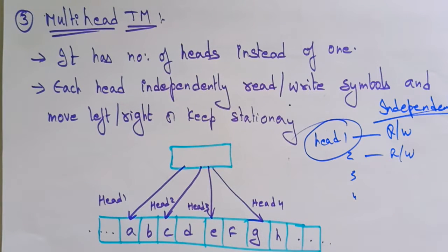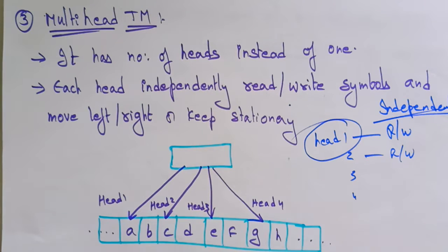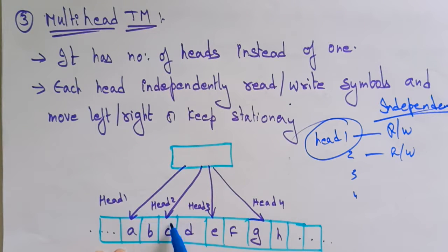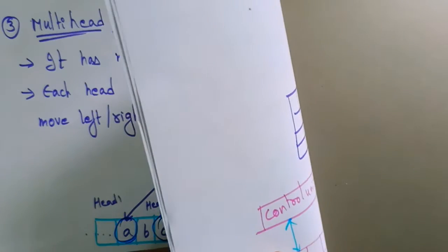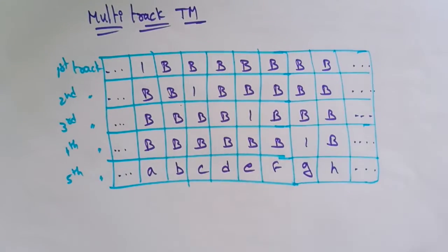You can read, or you can write, or if you want to keep stationary don't do anything. If you want to move towards the left you can move, or if you want to move towards the right you can move. So everything is independent — that is the multi-head Turing machine. Here each cell is pointing to one head: this head is head 1, this is head 2, head 3, and head 4. B, C, E, G are pointing towards the heads, and they move according to their equation.